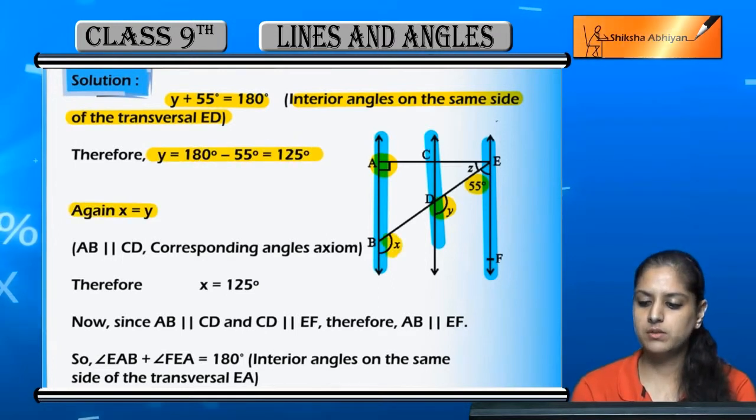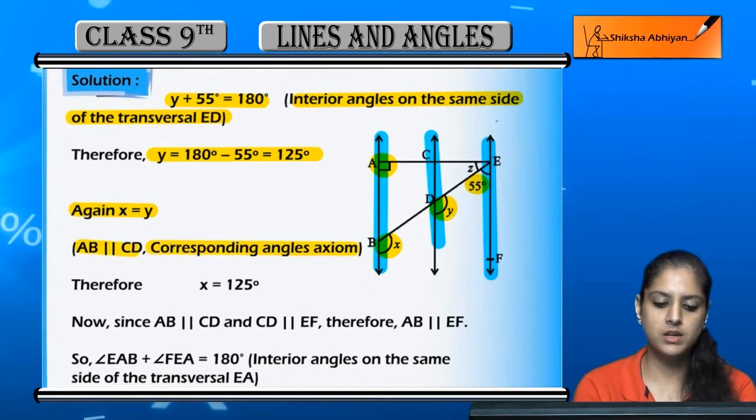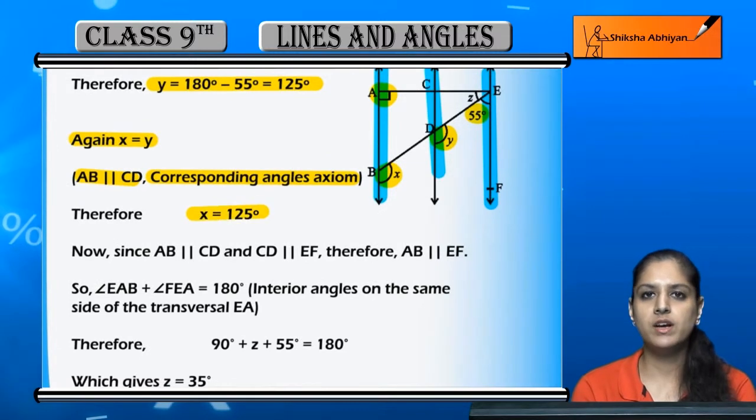x and y are equal because AB and CD are parallel, using corresponding angles. Therefore, x equals 125 degrees.